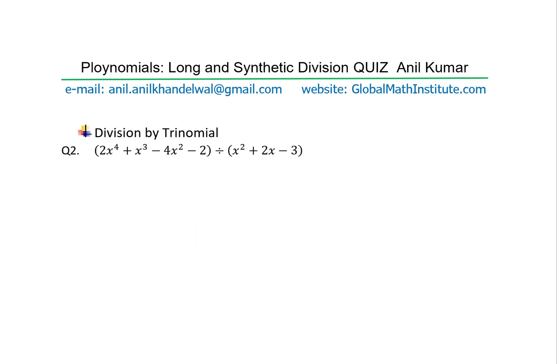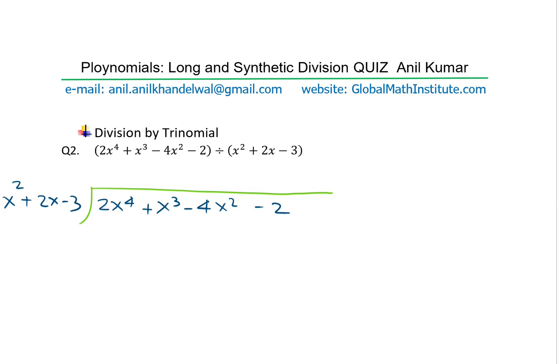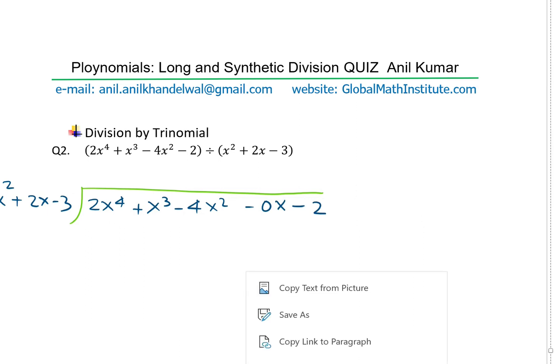Next question is division by a trinomial: 2x to the power of 4 plus x cubed minus 4x squared minus 2, to be divided using long division. Notice there is a term missing here — we should use a placeholder, which is a very critical step. So I'll put a placeholder of 0x and then put minus 2. You will soon see its importance as we move along. So we'll involve three terms from the divisor each time.